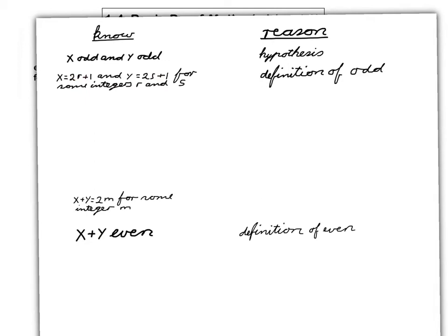Now, can we see how to link this step and this step? Well, we're trying to make a statement here about x plus y, and we have statements here about x and y separately. So maybe we should just simply add these two together. So we'll do that on the next line.